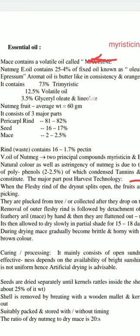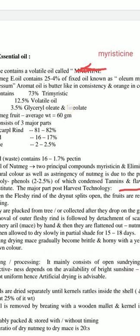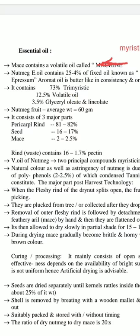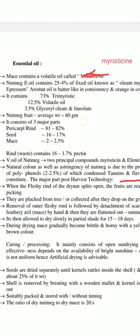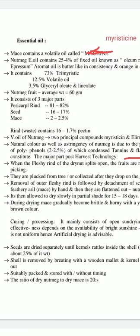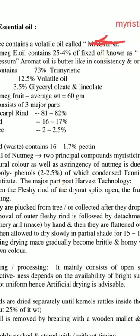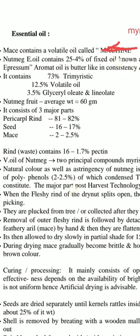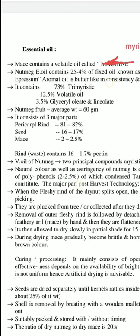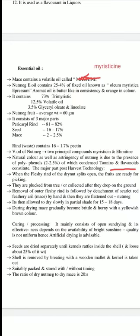Nutmeg essential oil contains 25 to 40% fixed oil known as oleum myristicae expressum. This is an aromatic oil with the consistency of butter and is orange in colour. It also contains 73% trimyristin, 12.5% different volatile oils, and 3.5% glycerol oleate and linoleate, which gives it a butter-like consistency.